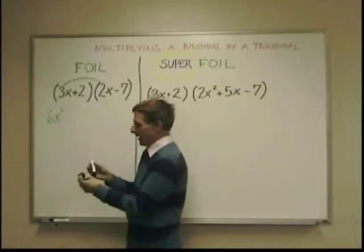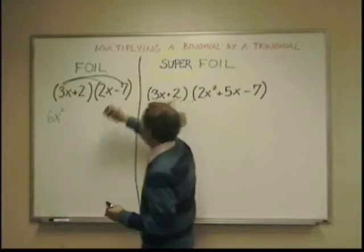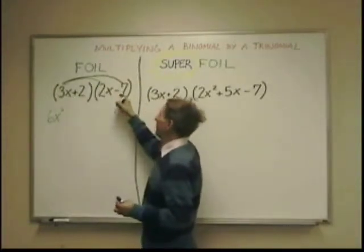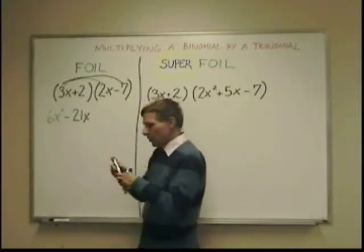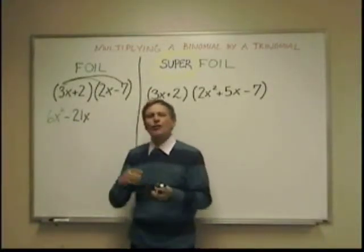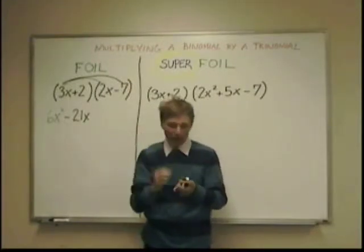Then, the outer. And I have 3x times negative 7 is negative 21x. Notice I'm using a different color for each connection. In foil, basic foil, you have four connections.